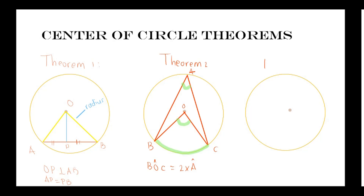Let's look at our last theorem for the center of circle theorems — Theorem 3. Theorem 3 says that if you have a diameter in a circle, then the angle that is subtended by the diameter is a right angle.